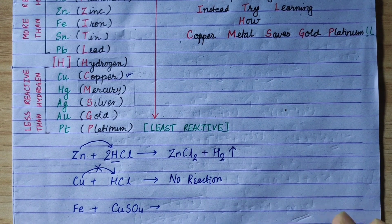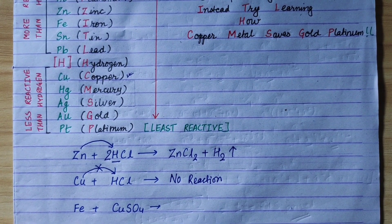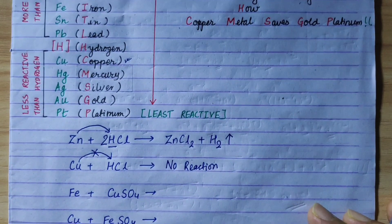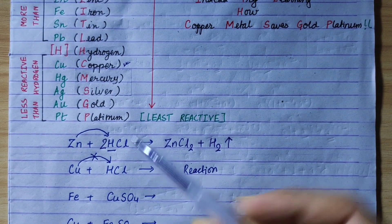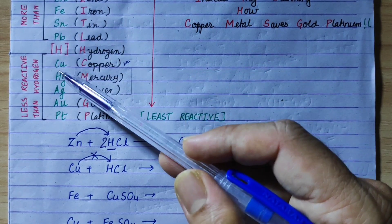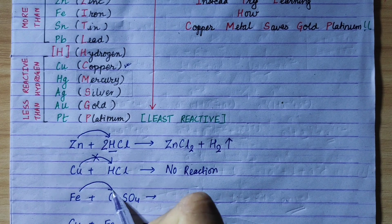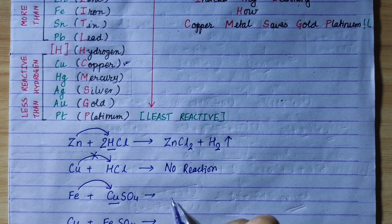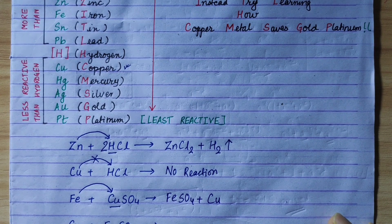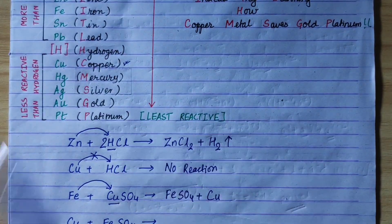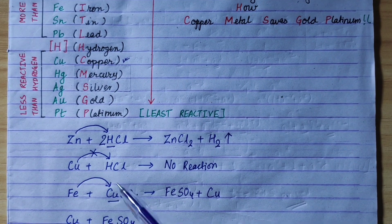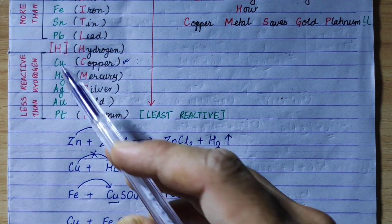This is the electrochemical series helping us determine whether a reaction will occur. For example, iron plus copper sulfate: in the electrochemical series, iron is above copper, meaning iron is more reactive than copper. So iron can displace copper from copper sulfate.